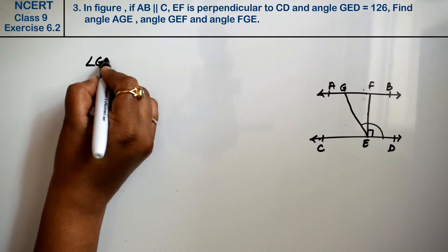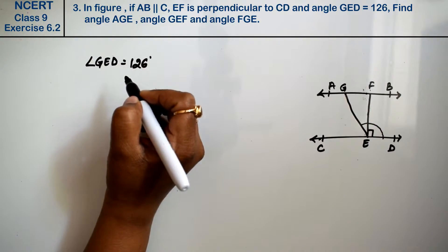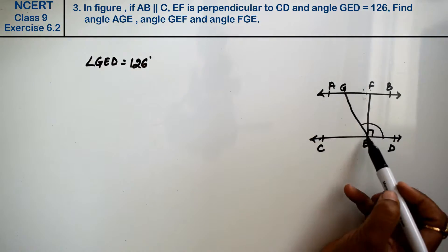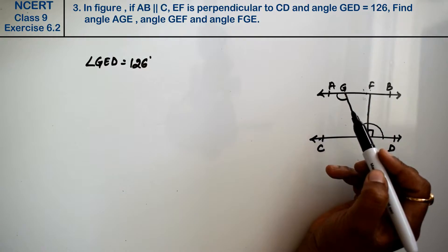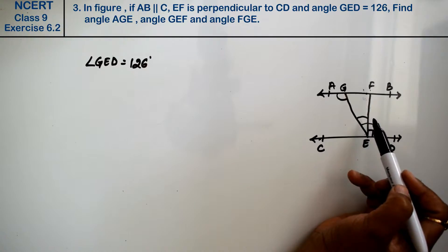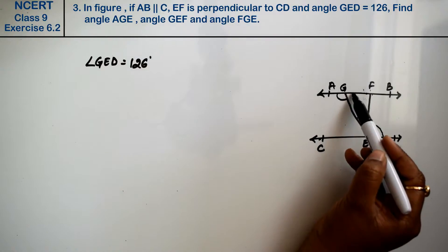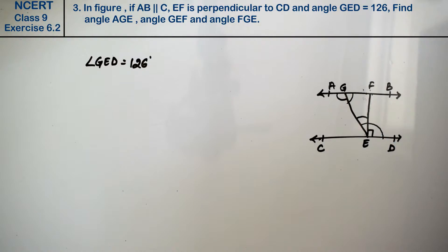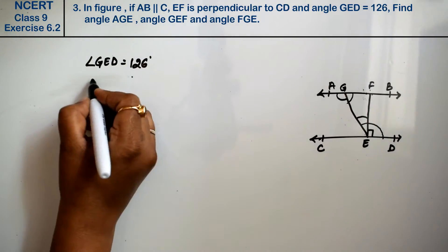GED is given to us as 126 degrees. Now we need to find angle AGE, angle GEF, and angle FGE. We are going to work with angle GED which equals 126 degrees, and we are going to split it.